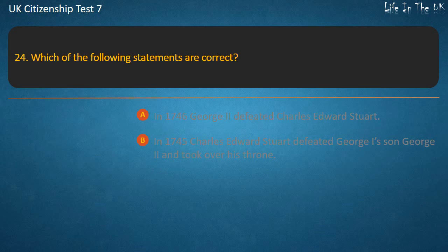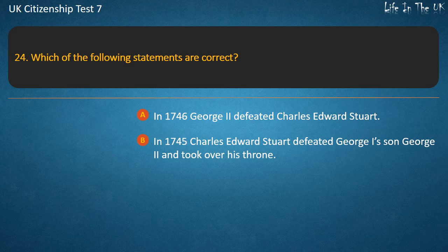Question 24: Which of the following statements are correct? Options: In 1746 George II defeated Charles Edward Stuart; In 1745 Charles Edward Stuart defeated George I's son George II and took over his throne. Answer: In 1745 Charles Edward Stuart defeated George I's son George II and took over his throne.